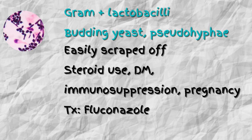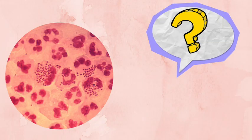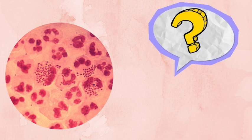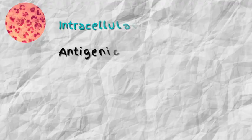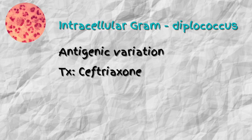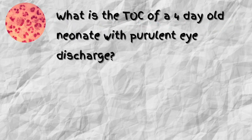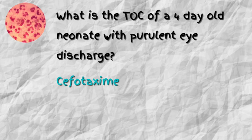What organism do you see in this image? Neisseria gonorrhoeae. This organism is an intracellular gram-negative diplococcus. It has antigenic variation, which is why there is no vaccine for it. It is commonly treated with ceftriaxone. For a high yield review question: what is the treatment of choice for a four-day-old neonate with purulent eye discharge? That is cefotaxime — this is a high yield review of neonatal conjunctivitis.